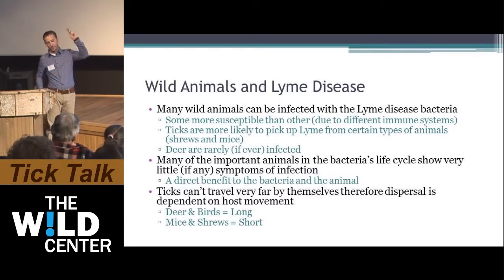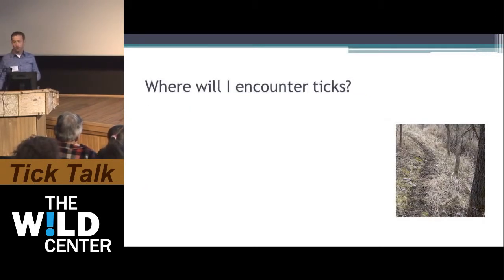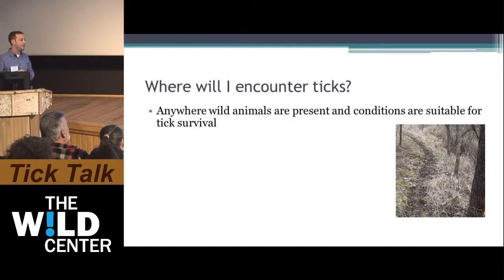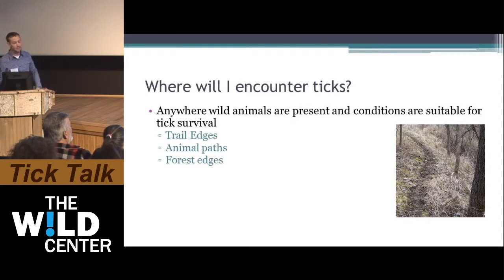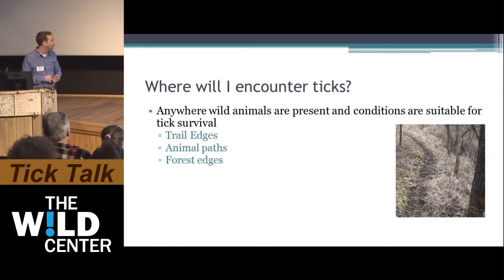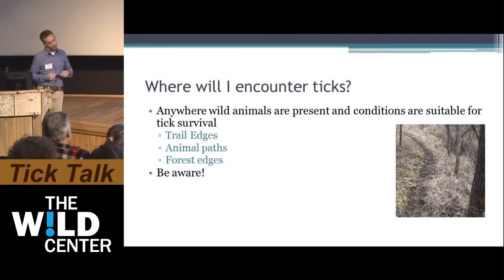Where are you going to encounter ticks? Anywhere wild animals are present and conditions are suitable for tick survival. Specifically: trail edges, animal paths, and forest edges — because that's where we walk, just like deer. Deer take the easiest route from A to B, just like we do. These trail edges are where ticks fall off animals and where we're most likely to encounter them.